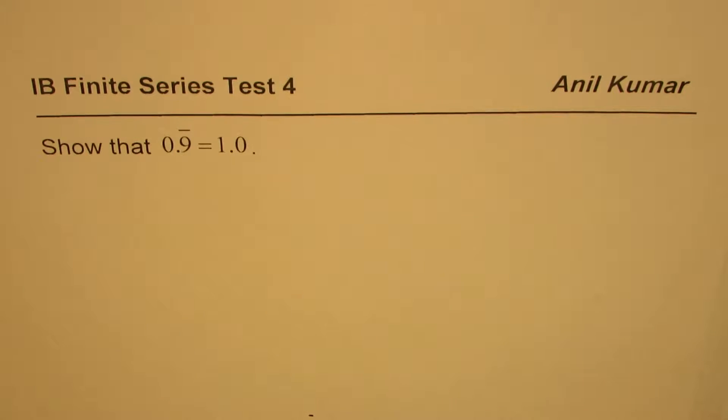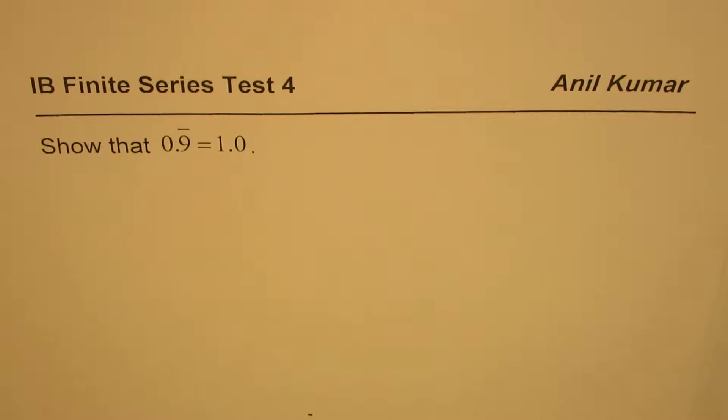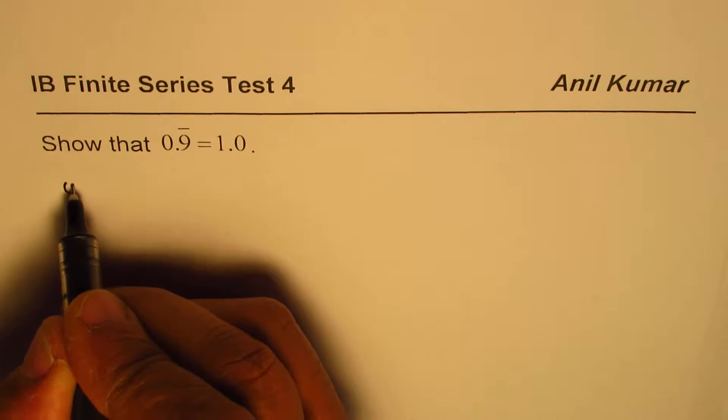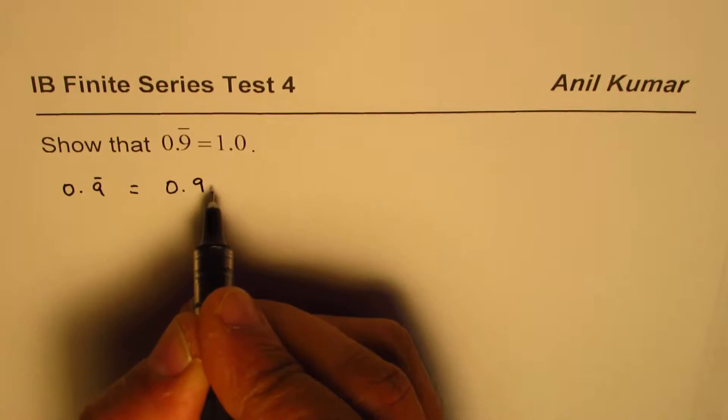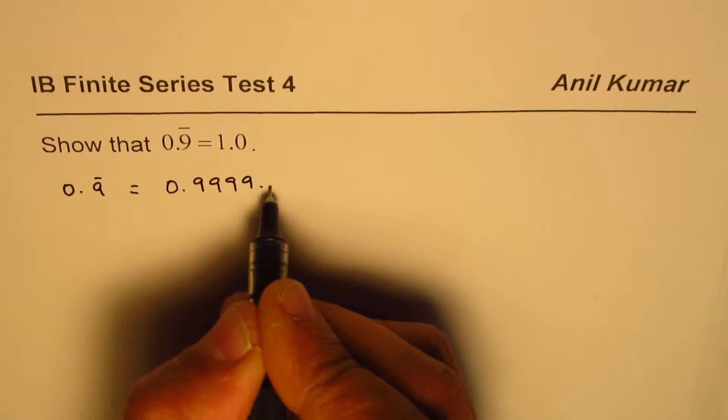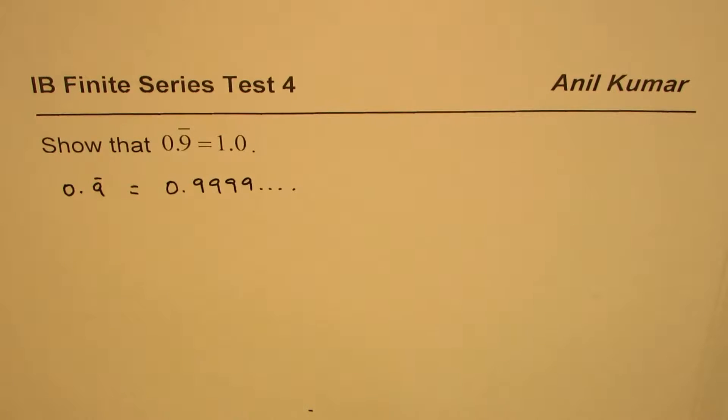I'm Anil Kumar and here is a question from a previous test paper: show that 0.9 recurring is equal to 1.0. So let's write what 0.9 recurring is - it is 0.9999... continuing like this. That is what 0.9 recurring is.